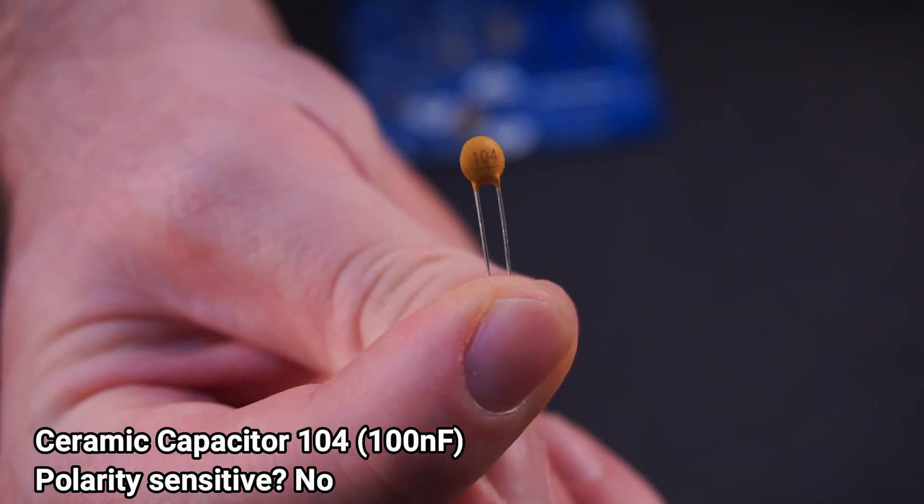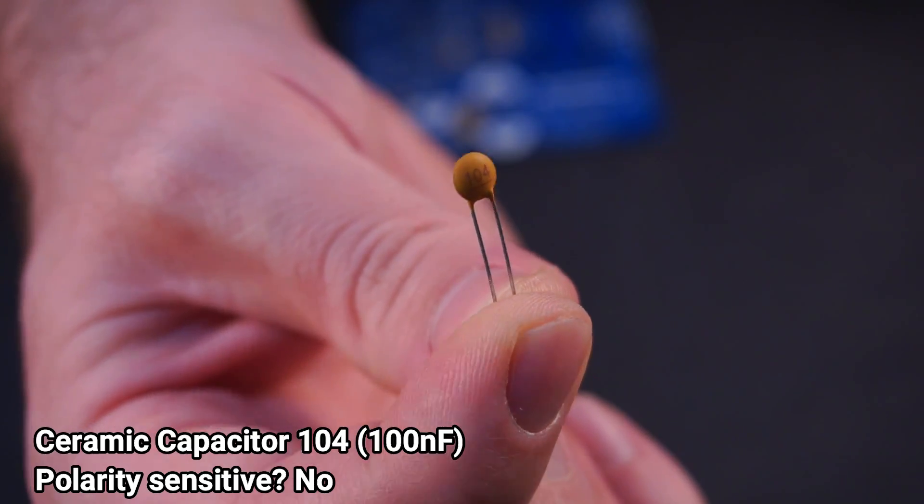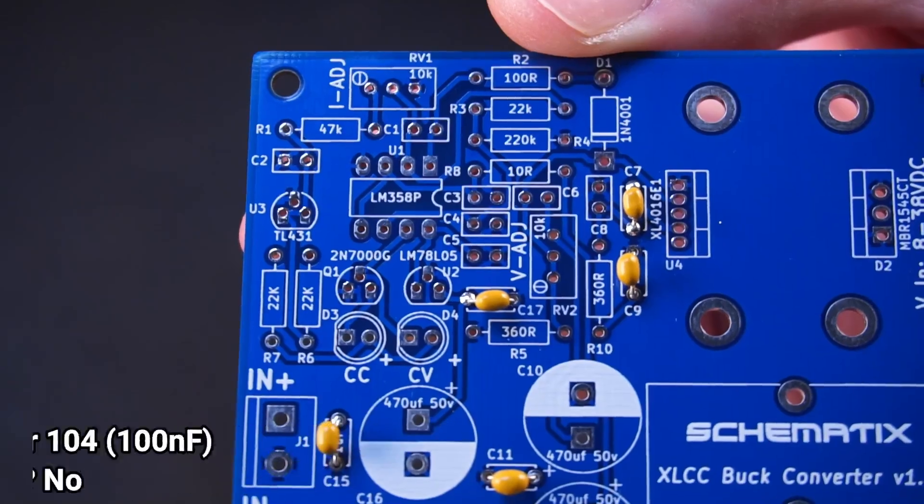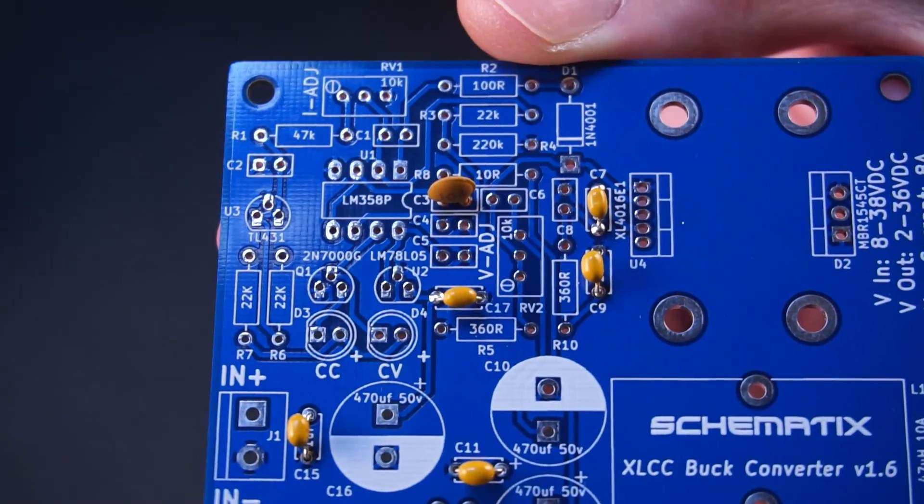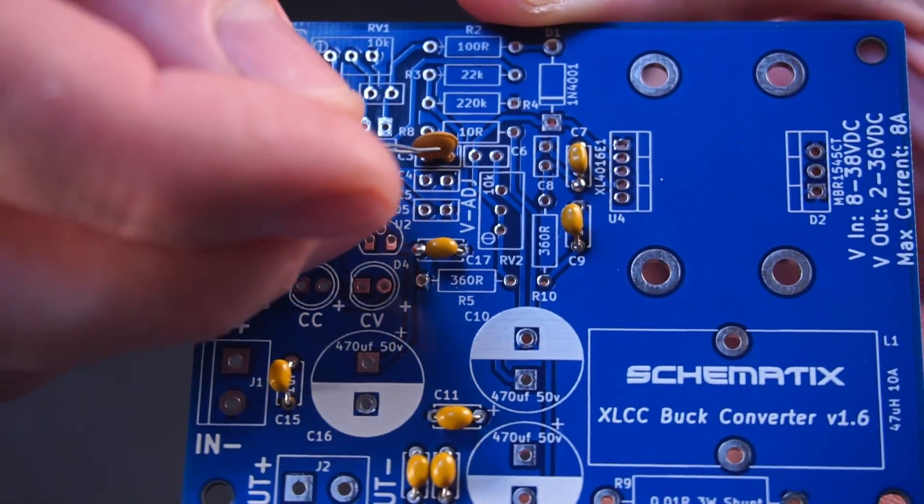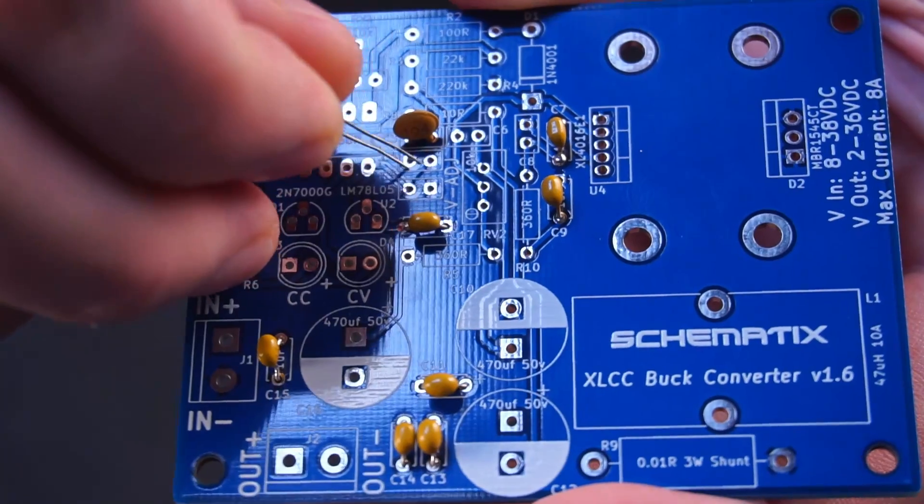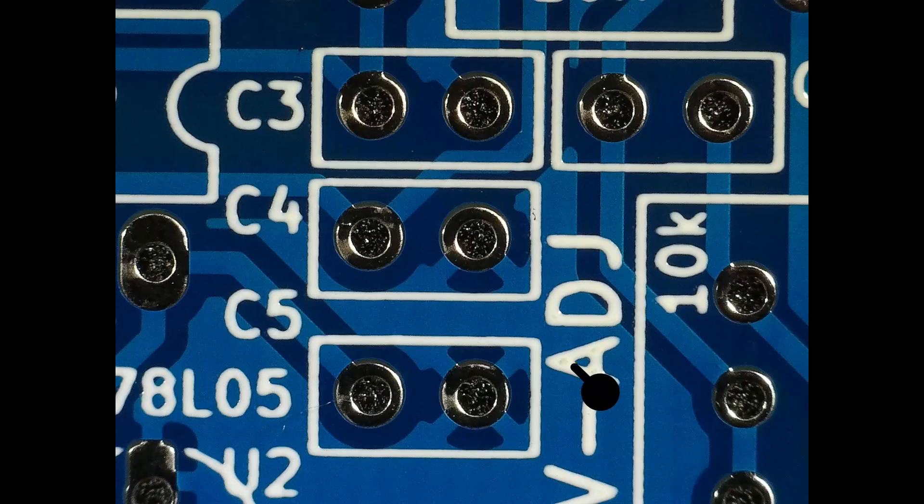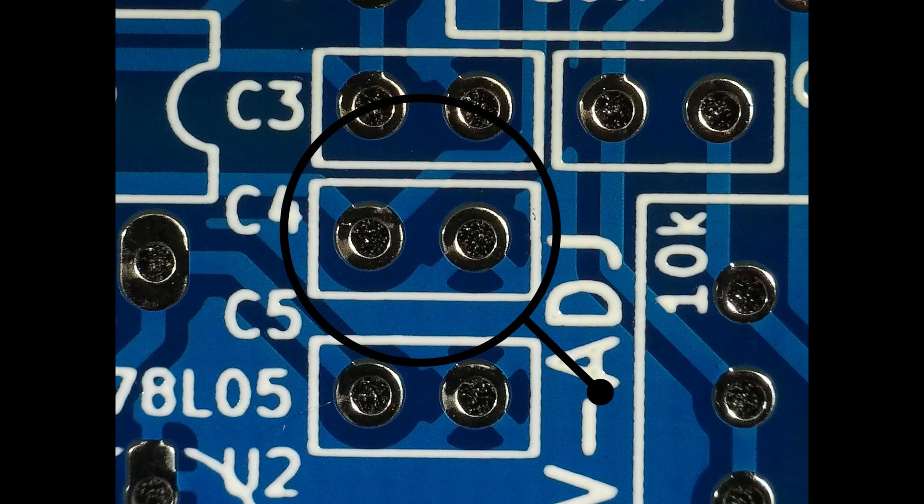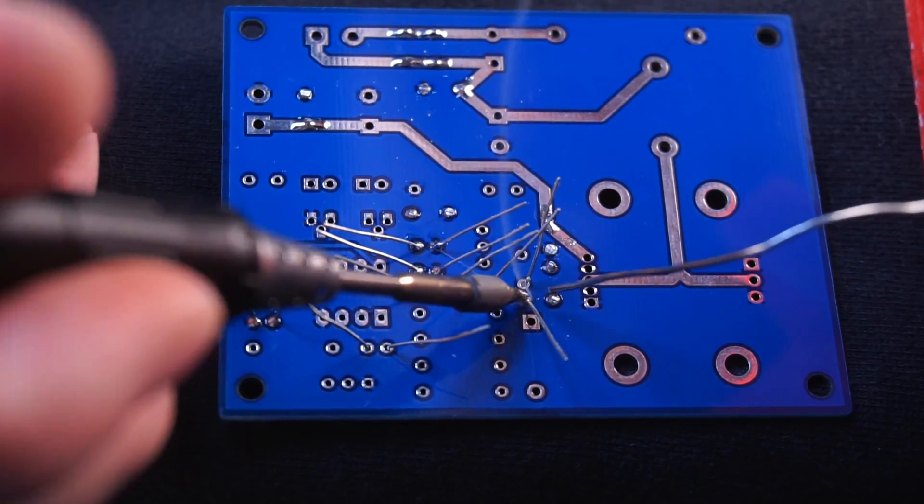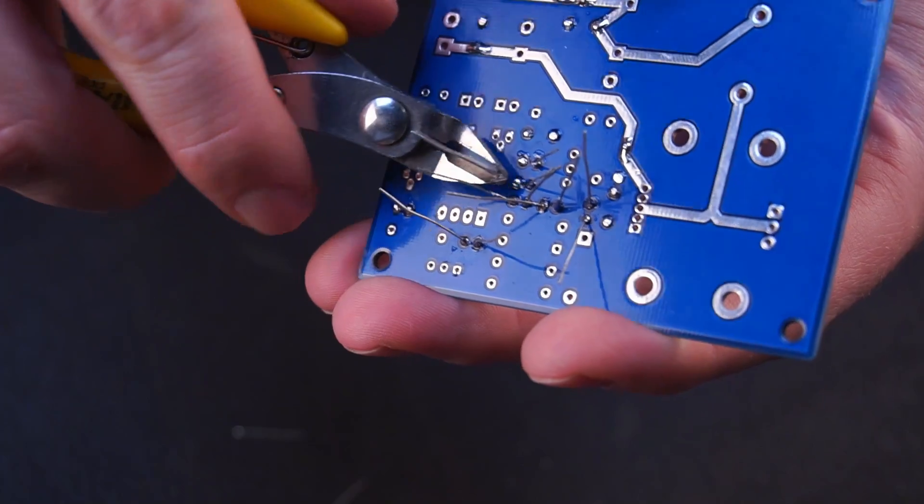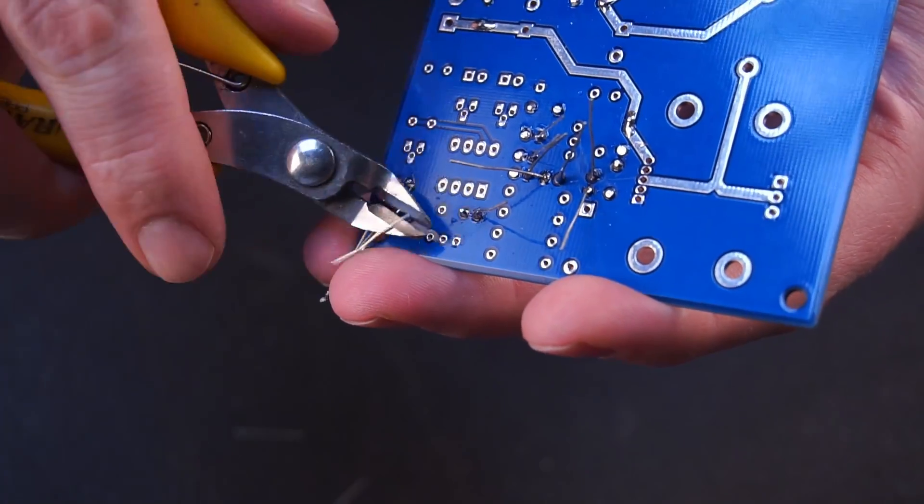Next I'll install the 100 nanofarad capacitors. These caps are the only component that does not have a label printed on the board, simply because there isn't enough room. But don't worry finding where they go is easy, just look for a white rectangle with two holes inside like this. I then bent the pins just like before and then soldered and trimmed the leads, which by now you'll be familiar with so I'll skip this step from now on.